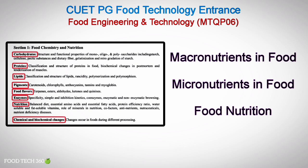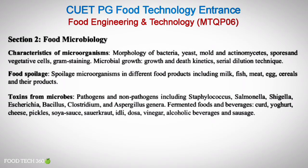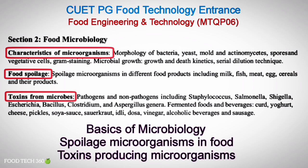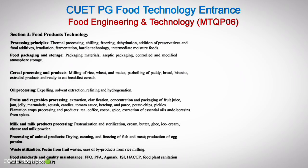Section 2, Food Microbiology, contains subtopics such as characteristics of microorganisms, food spoilage, and toxins from microbes. From this section we can expect questions on basics of microbiology, spoilage microorganisms, and toxins produced by them.